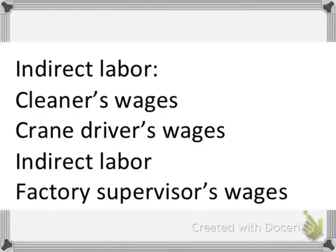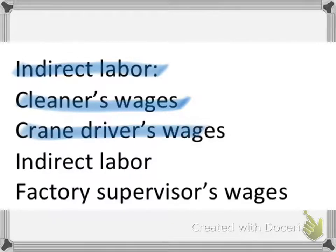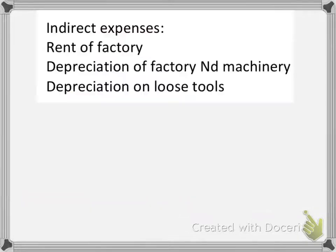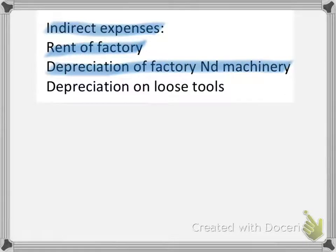Under indirect labor, examples include cleaner's wages, crane driver's wages, and factory supervisor's wages. Under indirect expenses are the rent of a factory, depreciation of factory and machinery, and depreciation of loose tools.